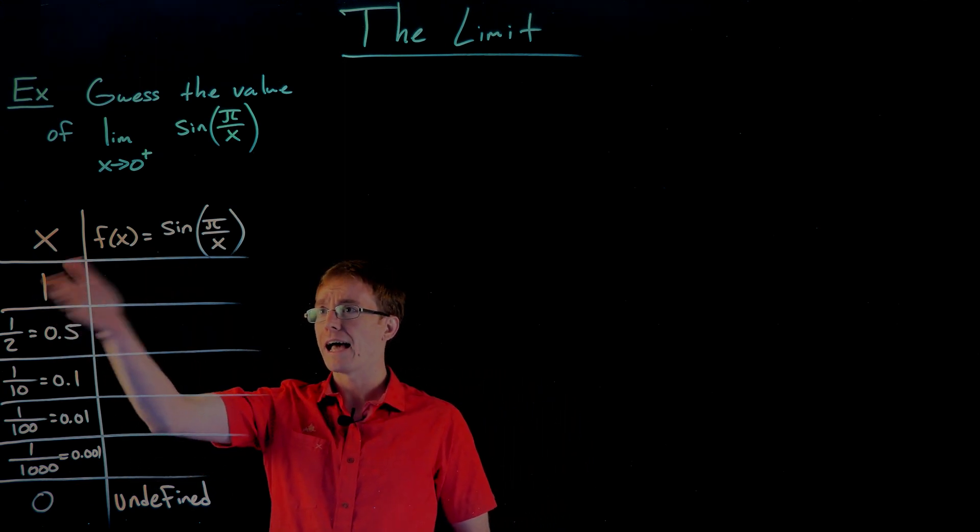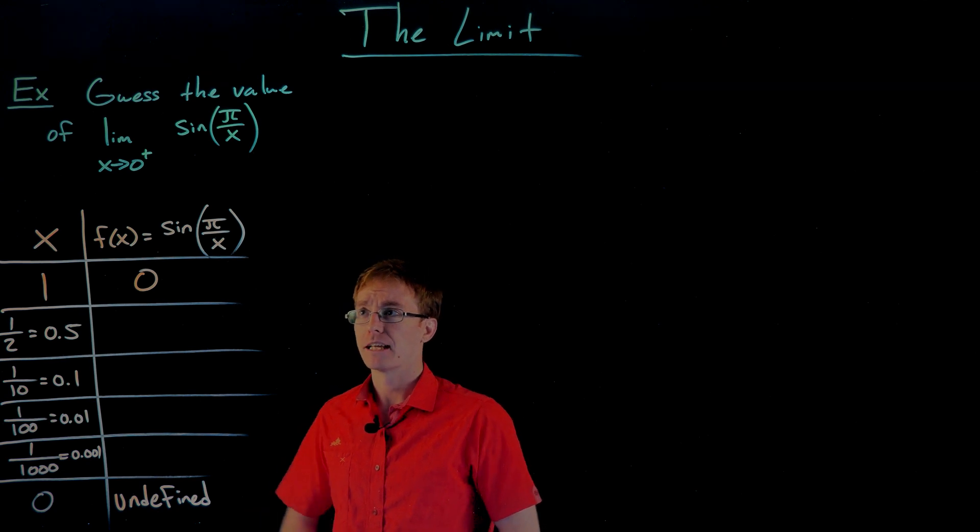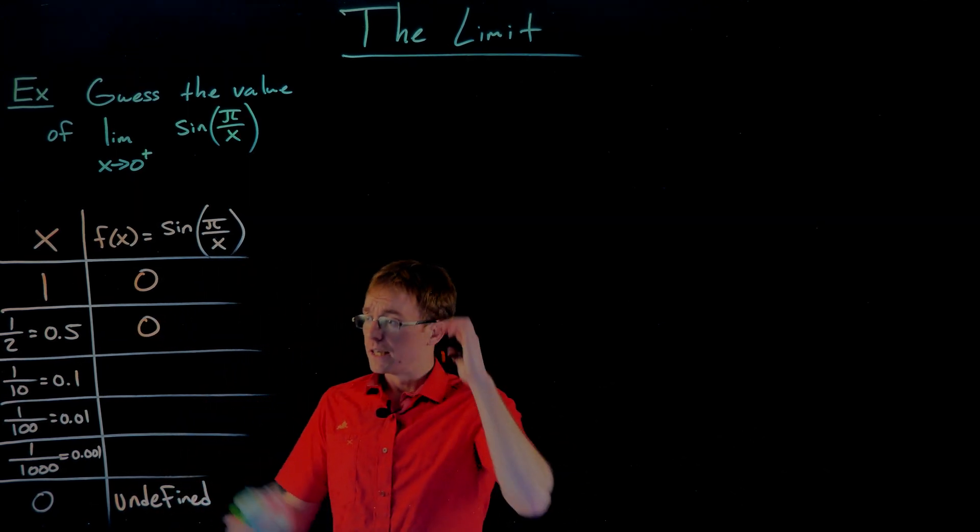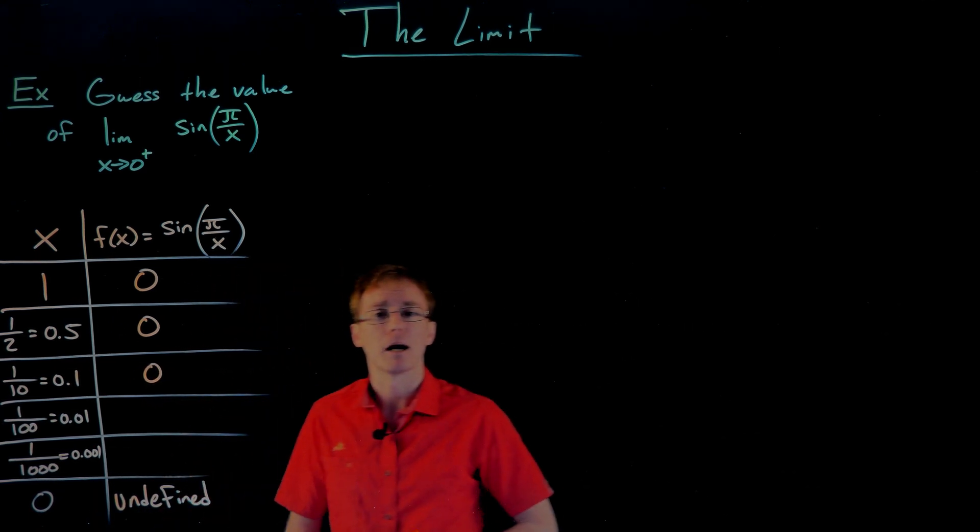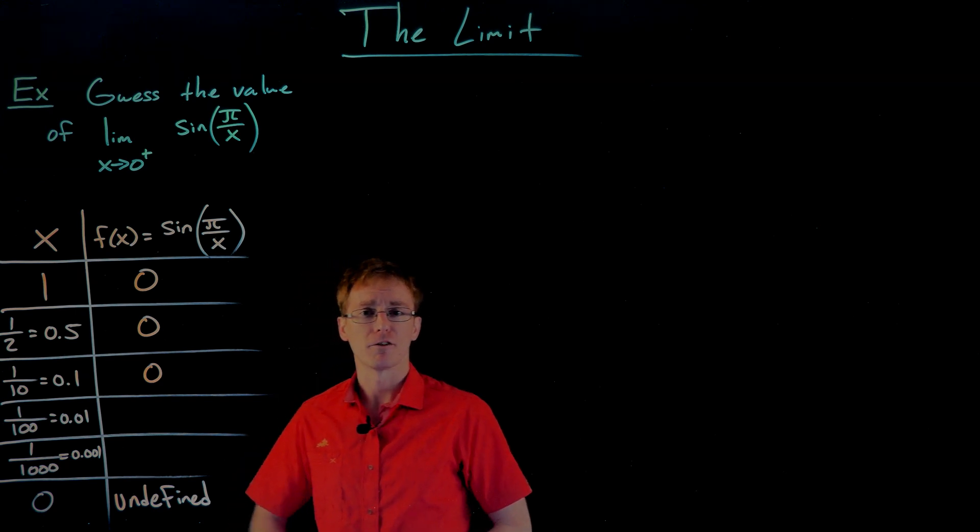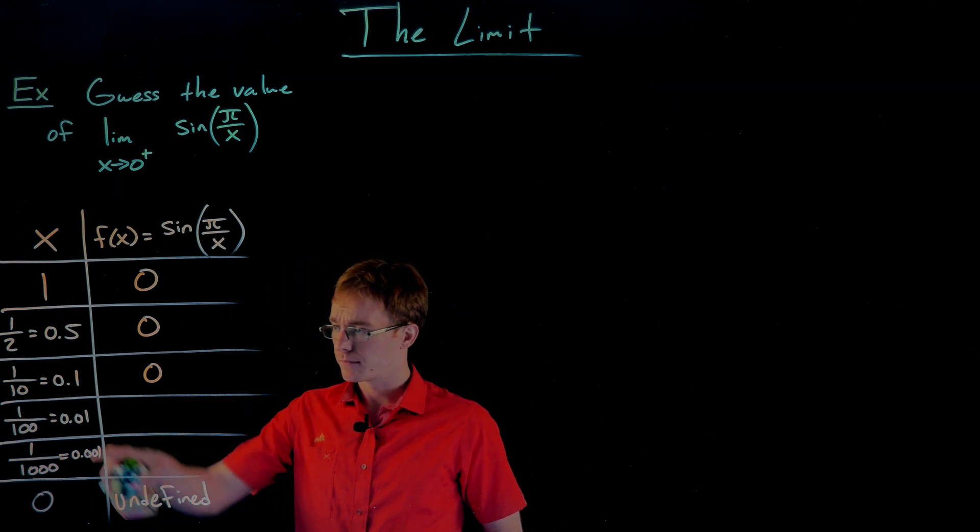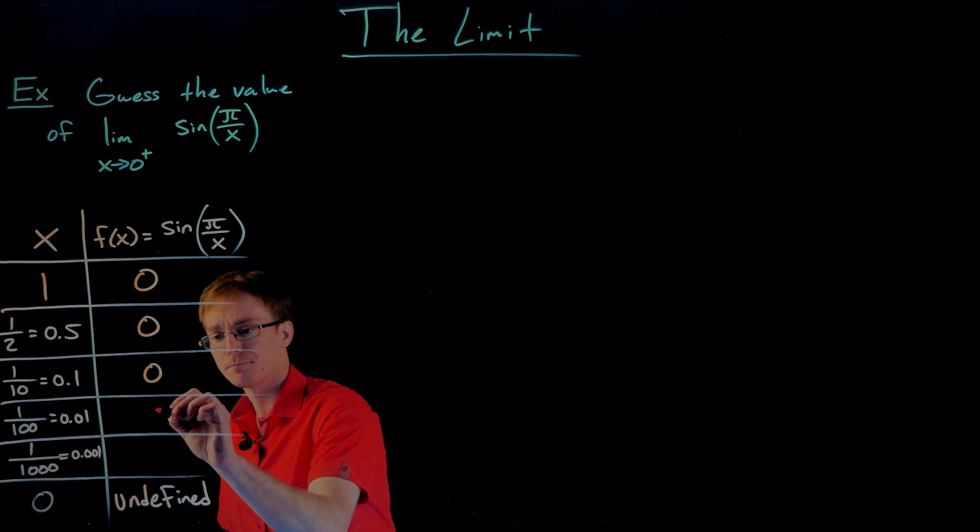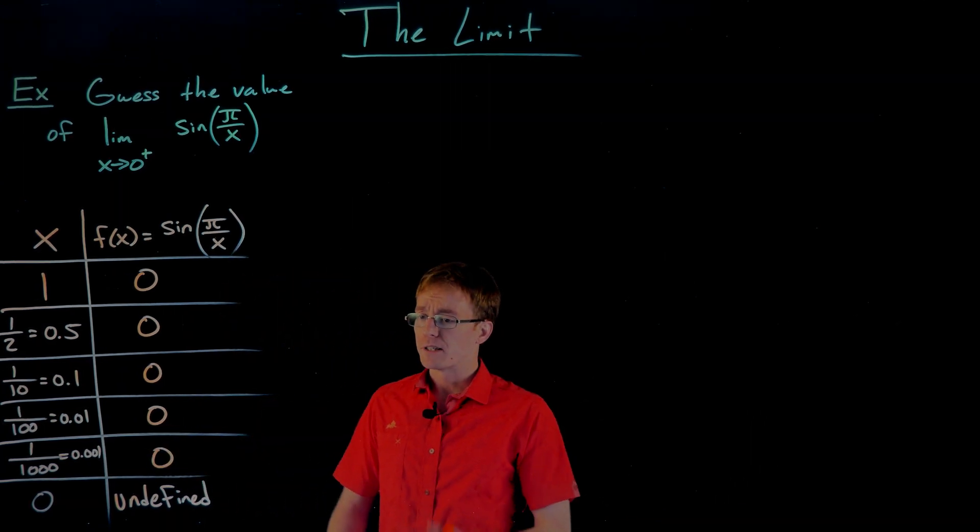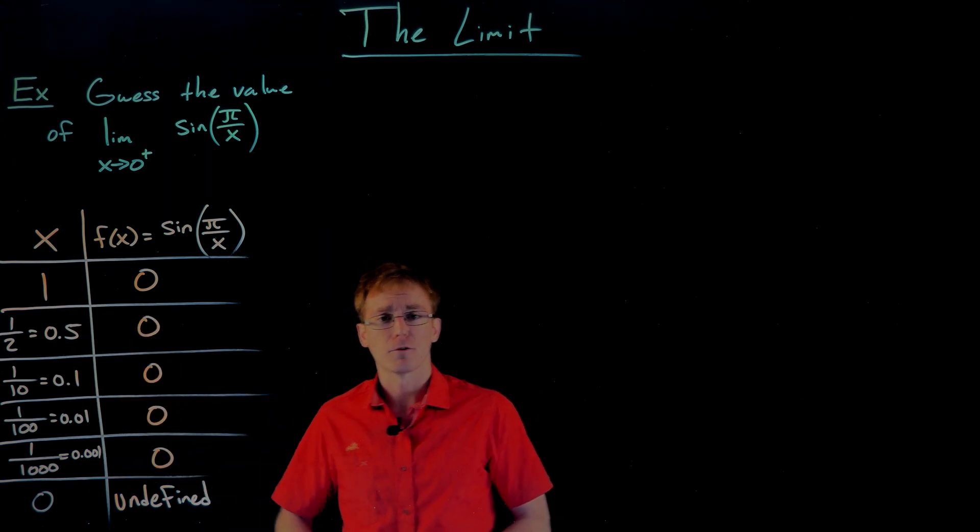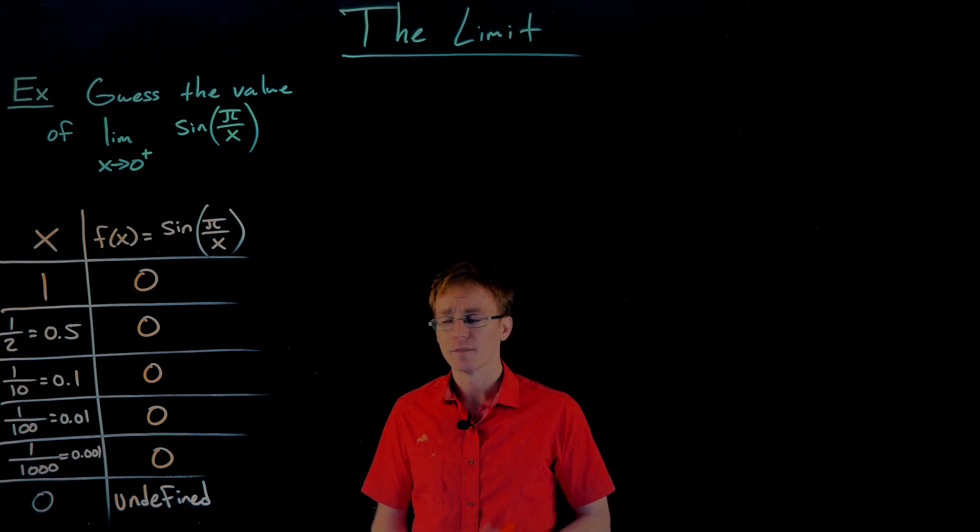Starting with the first one, well if we plug x in, we get sine of pi, which is zero. If we plug x equals one half in, or 0.5, we end up getting sine of two pi, which is also zero. If we plug one tenth in for our x value inside of our function, that'll turn into sine of ten pi. But sine of ten pi is also zero. So far it looks like we have the output of our function as zero each and every time. If we do this for our next couple entries in our table, we're going to get the exact same thing. If we plug one hundredth into our function, we get sine of one hundred pi, which is also zero. If we plug one thousandth into our function, yep, you're right, we're going to get zero again. So based off this sequence of x values, which is certainly approaching zero from the right, it looks like our function is always having the output of zero. So maybe the limit of this function as x approaches zero is actually zero.